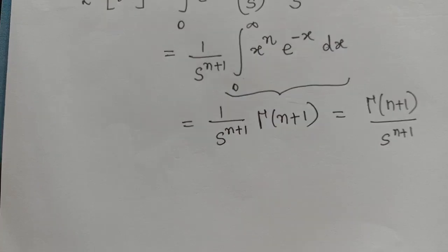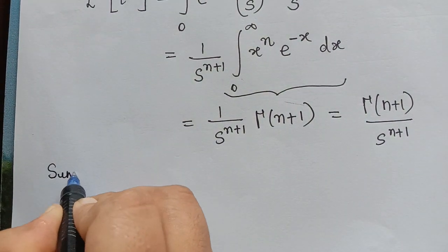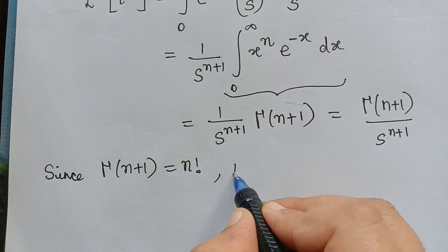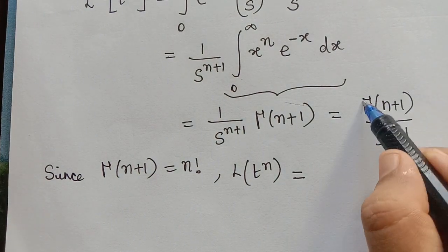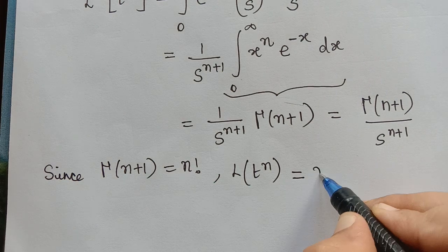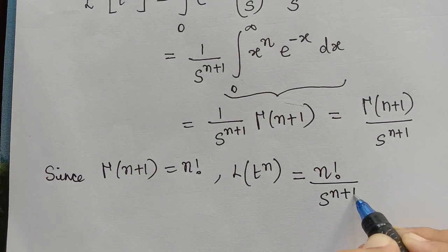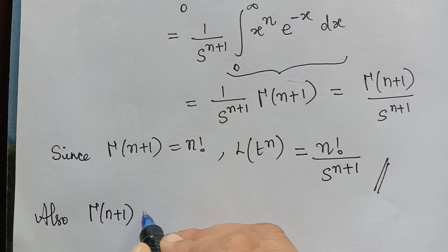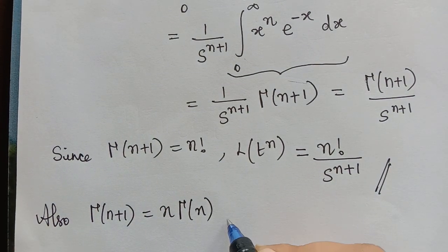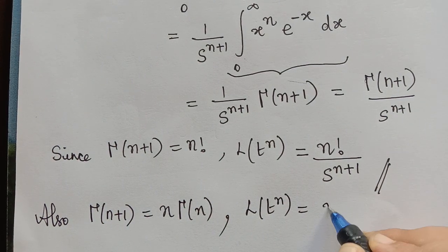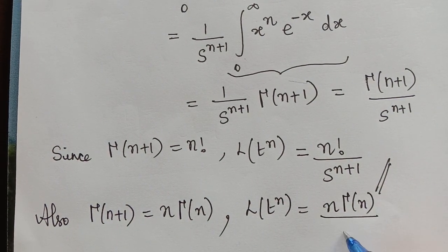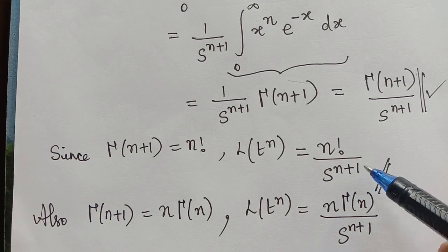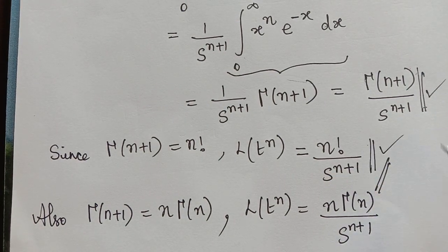To conclude: since gamma of n plus 1 equals n factorial, the Laplace transform of t to the power n equals n factorial divided by s to the power n plus 1. Also, since gamma of n plus 1 equals n gamma n, we obtain the Laplace transform of t to the power n equal to n gamma n divided by s to the power n plus 1. So we have obtained three different representations for the Laplace transform of t to the power n.